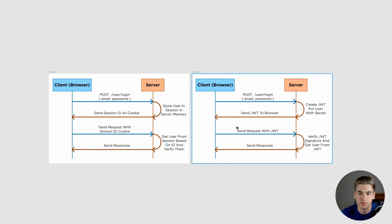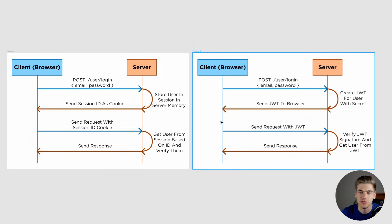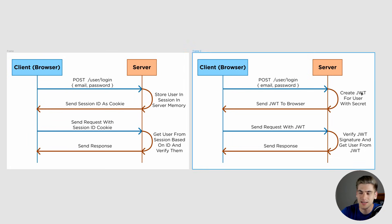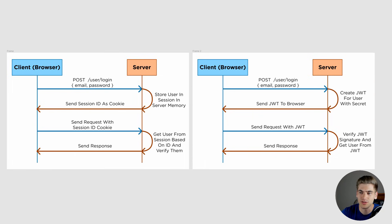The other form is JWT. It works very similarly at the beginning — we make a POST request with our email and password and send that to the server just like before. But instead of storing information on the server inside session memory, the server creates a JSON web token, this JWT, and it actually encodes and serializes that and signs it with its own secret key. So the server knows that if you tamper with it, it's invalid. It can verify that based on the fact that it signed it with a secret key. Then it takes that JWT and sends it back to the browser. Importantly, nothing is stored on the server — the JWT has all the information about the user built into it.